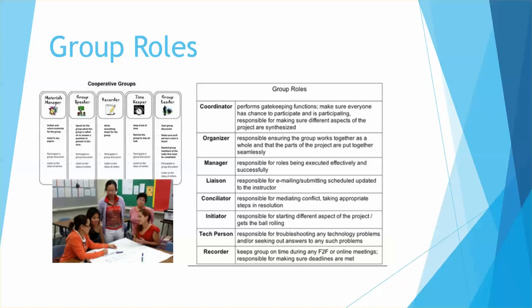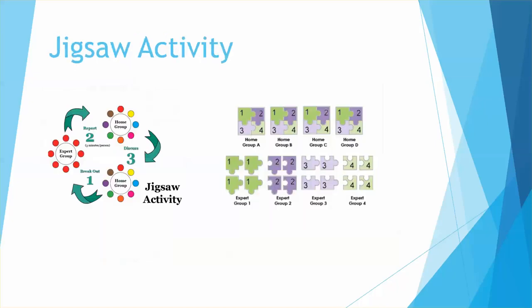Raul swaps their group roles every time, so each student gets a chance to try each role. Once they have mastered and are fairly efficient in their groups, Raul likes to have them jigsaw in slightly larger groups, labeled A through G.